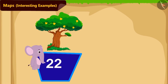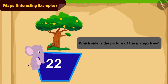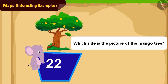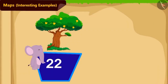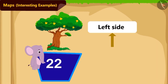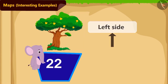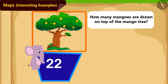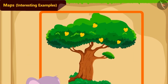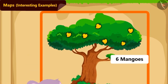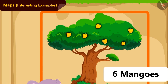Can you tell on which side of tile number 22 is the picture of a mango tree? Yes! The picture of a mango tree is to the left of tile number 22. And how many mangoes are painted on top of that mango tree? Absolutely right! 6 mangoes!